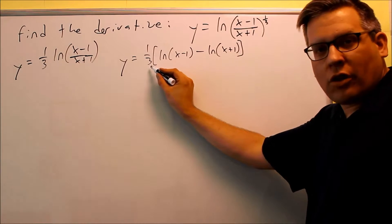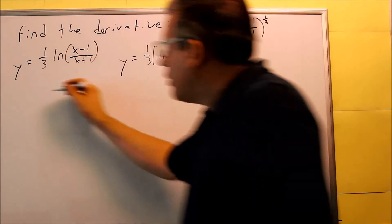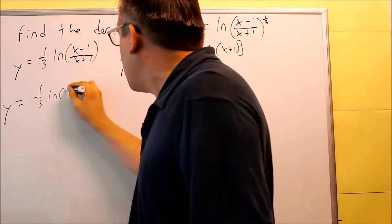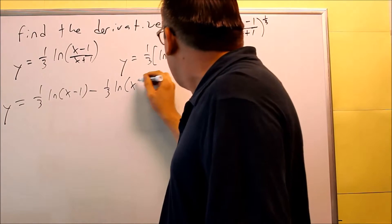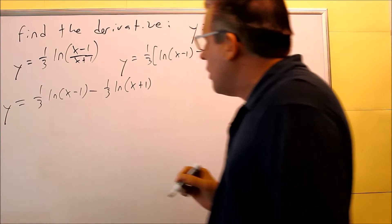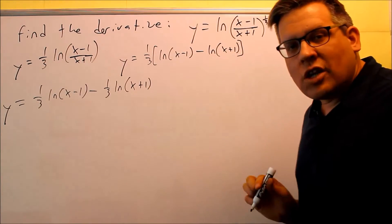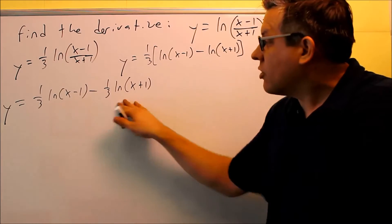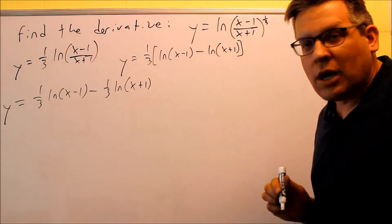You've got to remember to keep the 1/3 on the outside. That's actually going to be multiplied all the way through. And then what I'll do is I'll multiply that 1/3 out: 1/3 natural log (x minus 1) minus 1/3 natural log (x plus 1). So getting it down in this form, this means that we're ready to take the derivative. We've separated it as much as we can go. It's going to be a lot easier now to do the problem this way because we have separate terms because we've applied the log properties.